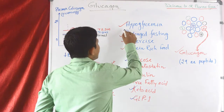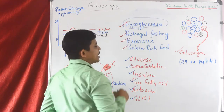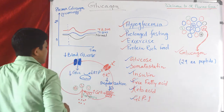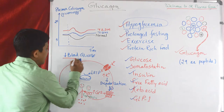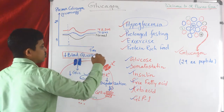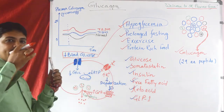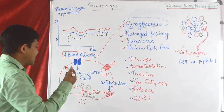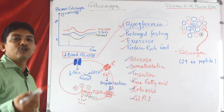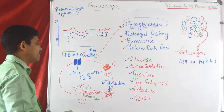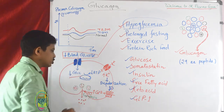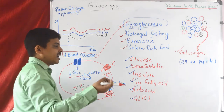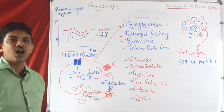Hypoglycemia is one of the important stimuli for glucagon secretion. When there is reduced blood glucose level — hypoglycemia — intracellular glucose also decreases. This reduction in intracellular glucose affects ATP generation, reducing the production of ATP.